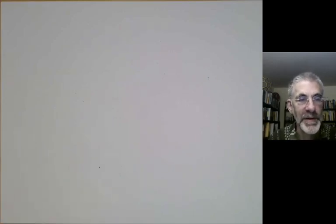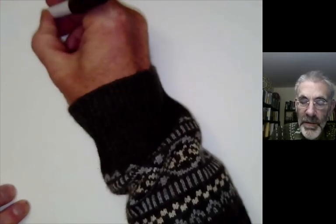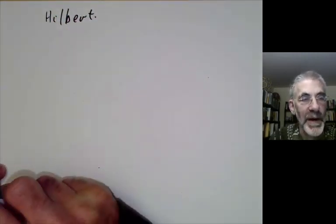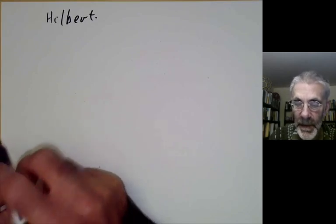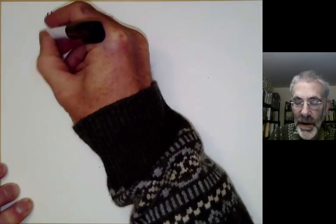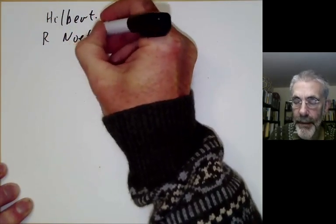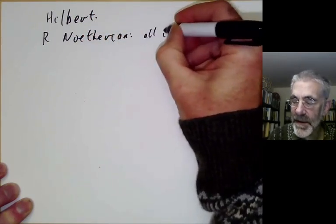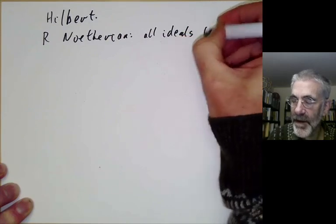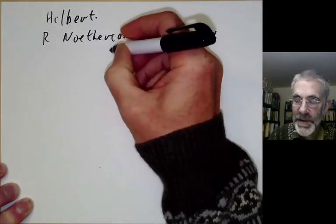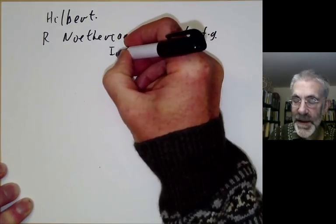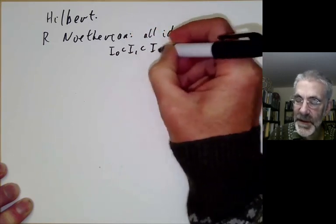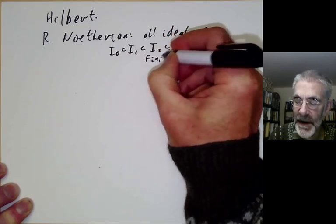This lecture is part of a series of lectures on rings and modules, and will be about Hilbert's Finiteness Theorems about Noetherian rings. We recall that a ring R is Noetherian means either all ideals are finitely generated, or equivalently, any strictly increasing sequence of ideals must be finite in length.